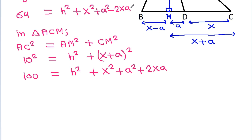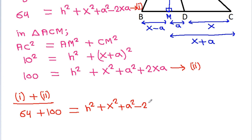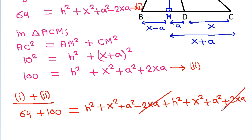Suppose this is equation 1 and this is equation 2. If we add equation 1 and equation 2, then 64 plus 100 equals H square plus X square plus A square minus 2XA plus H square plus X square plus A square plus 2XA, and the 2XA terms will get cancelled.